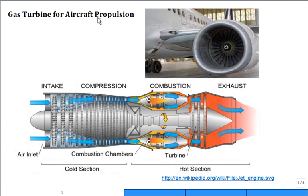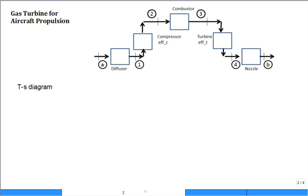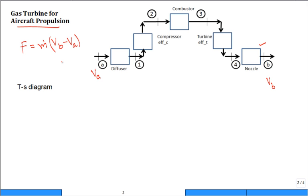Last time we had an introduction to what is basically a jet engine and we talked about how that gives us thrust. The major components were a diffuser, a compressor, a combustor, a turbine, and a nozzle. The goal of the gas turbine for aircraft propulsion is to come out with a very high exit speed, because mass flow rate times exit speed gives us the thrust — or the difference if inlet speed is not negligible.